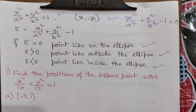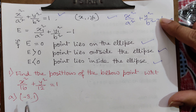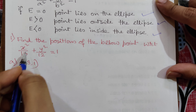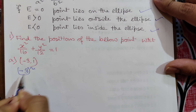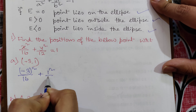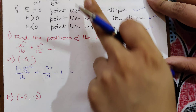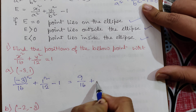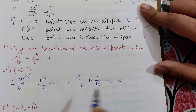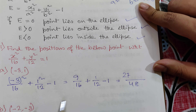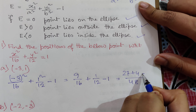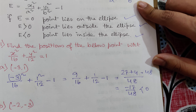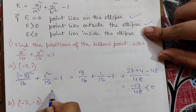Let's discuss this with some examples. First, find the position of the point (-3, 1) with respect to the ellipse. Substituting x1 = -3 and y1 = 1: (-3) squared by 16 plus 1 squared by 12 minus 1, which gives 9 by 16 plus 1 by 12 minus 1. Taking LCM as 48: 27 plus 4 minus 48 = -17 by 48, which is less than 0, so the point lies inside the ellipse.